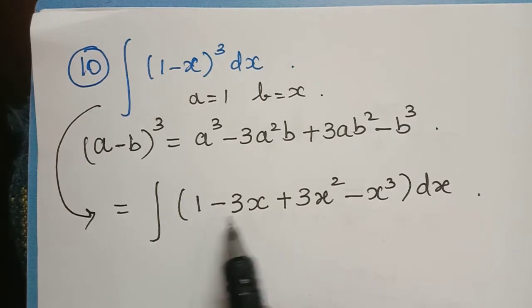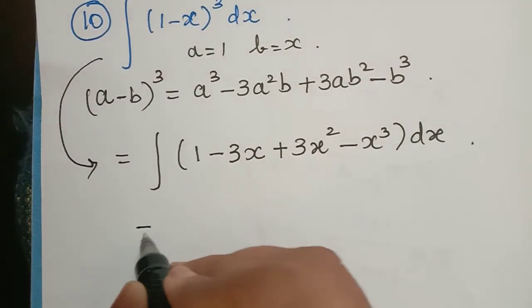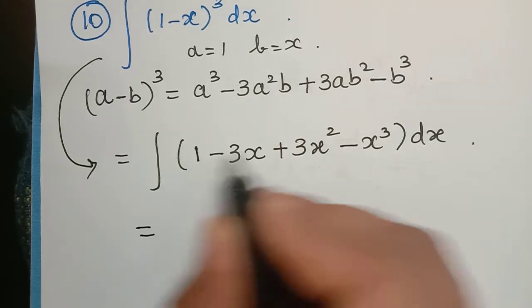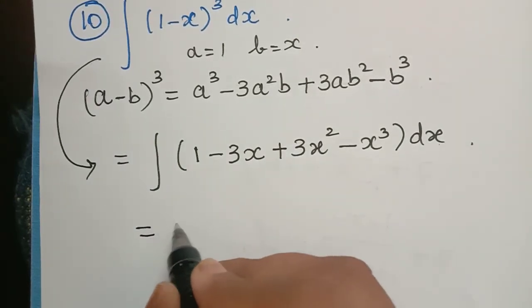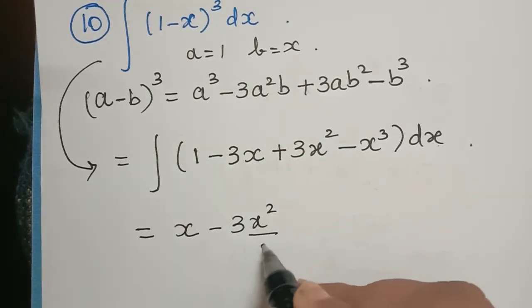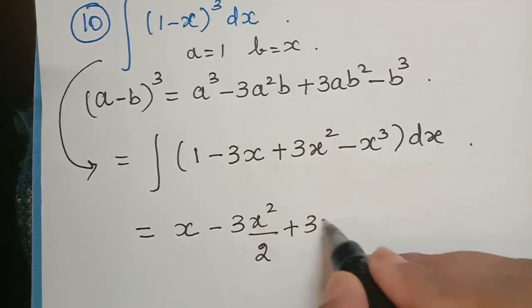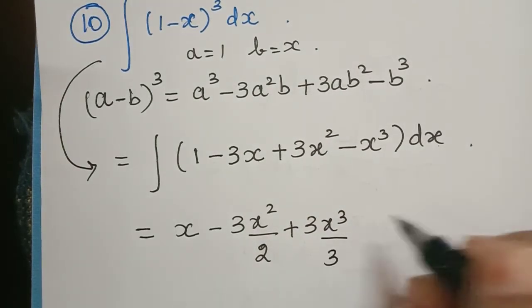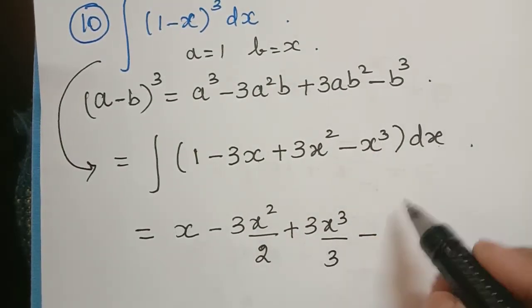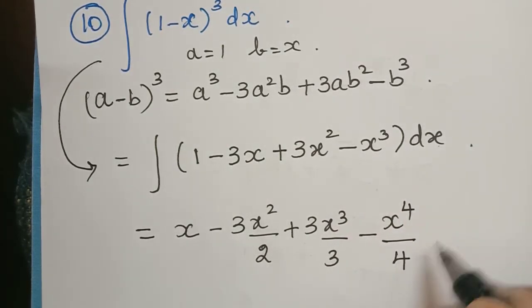Now we have to integrate each term separately here. So when we do so we get it as integral of dx is equal to x, and then minus 3 integral of x is x²/2, plus 3 integral of x² is x³/3, and then we have x³ which is minus x⁴/4 plus c.